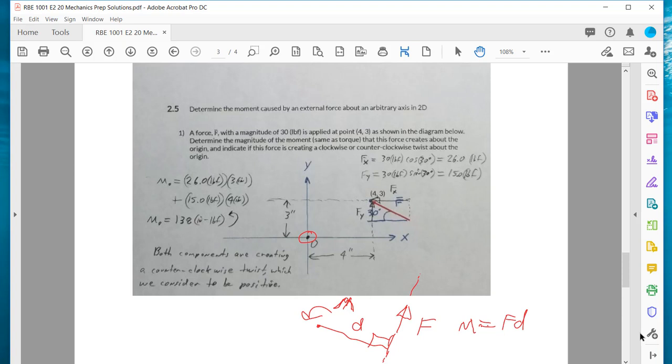We could have done this problem by figuring out from trig what this distance is. Then the moment would just be 30 pounds times the distance D. And we'd get the same thing, 138 inch-pounds. But you can see that it's easier just to break it into its two components.